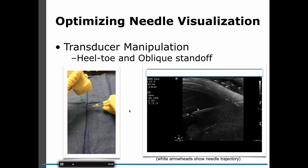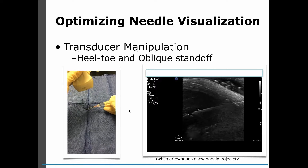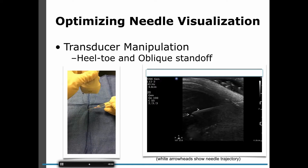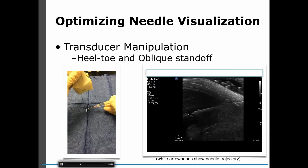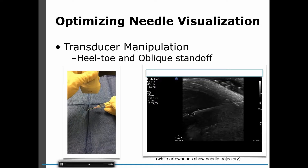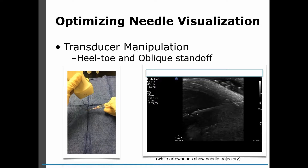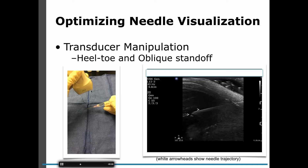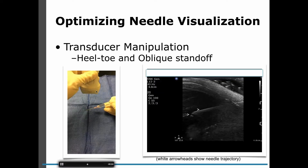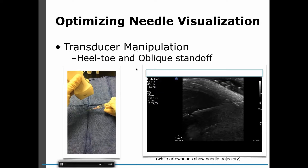What you can do is drop the probe side closest to the needle, so that you are more parallel with the needle directly underneath it. If you can't manipulate the tissue by pushing down and bending it, you can add a bunch of ultrasound gel under the high side so that you maintain contact with ultrasound gel the whole time.